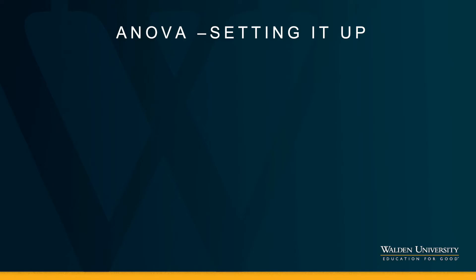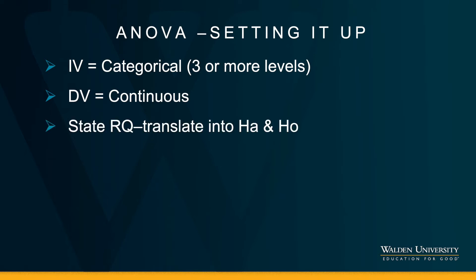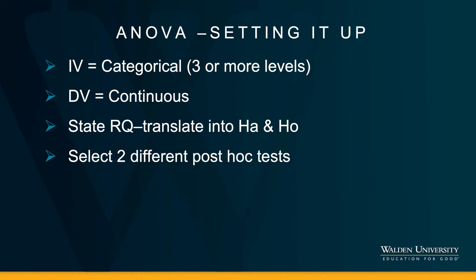Let's look at the details of setting up the ANOVA test. You know by now that we need to work with an IV that is categorical and has at least three levels. The DV is the same as in any compare-means test — it's meant to be continuous, also called scale in SPSS. We need a research question that we will translate into alternative and null hypotheses, and we will select two different post-hoc tests depending on the outcome of Levene's test.